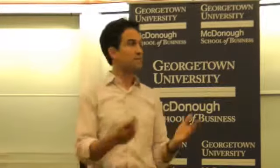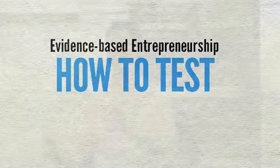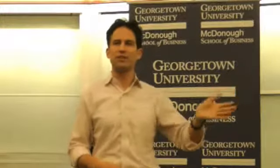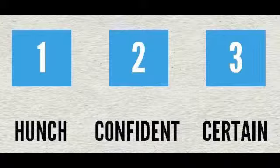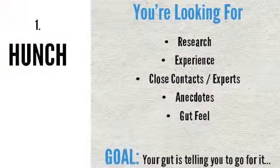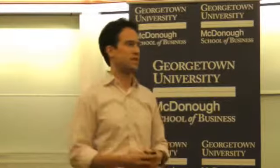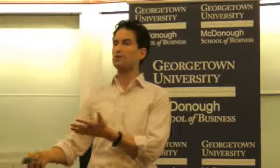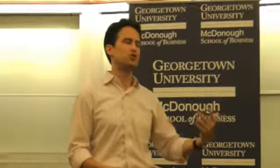The next question people always ask is: how do you actually test? I break the testing thing into three different stages. The first is hunch. When you're at the hunch stage, you're looking for things that give you a sense you're heading in the right direction — your gut is telling you to go for it and you're looking for validation. You're not looking for lots of feedback or surveys; you're looking at broad themes. Research, experience, interviews with close contacts. You've got a hunch there's something here, and you're going to continue to run after it. Look for chances to interview someone who's an expert in the field or talk to a family member with a business in the area you want to serve.